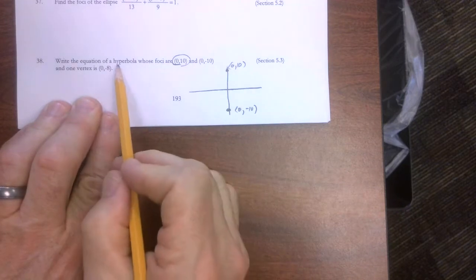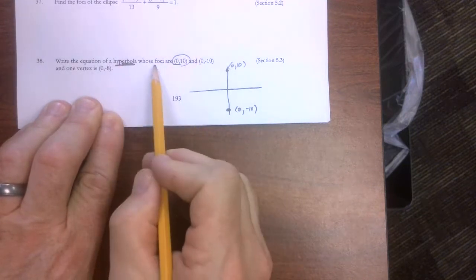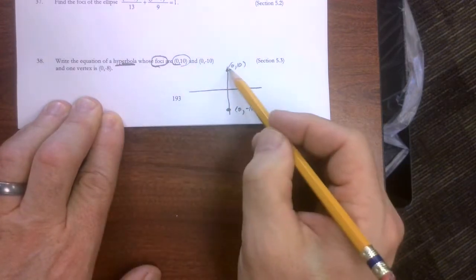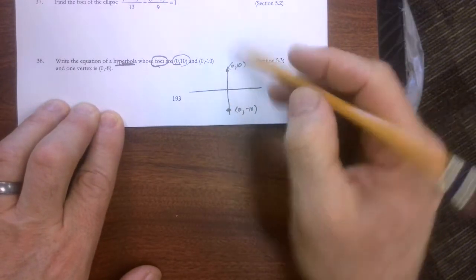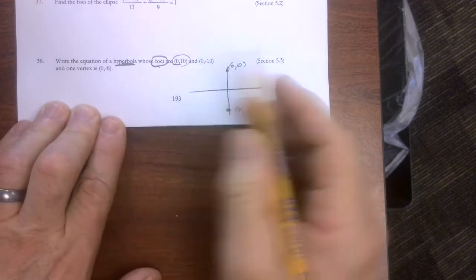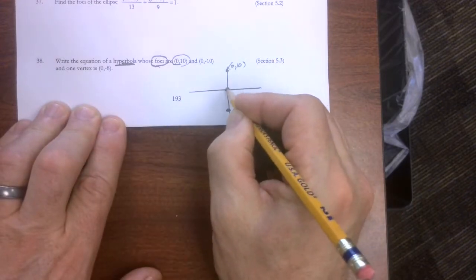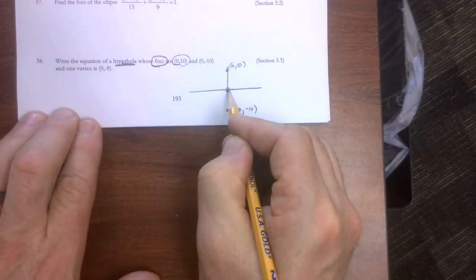And it does say this is a hyperbola. And the foci are here and here, which is telling us a couple things. First of all, the center of the hyperbola is 0, 0, which makes it an easy one.